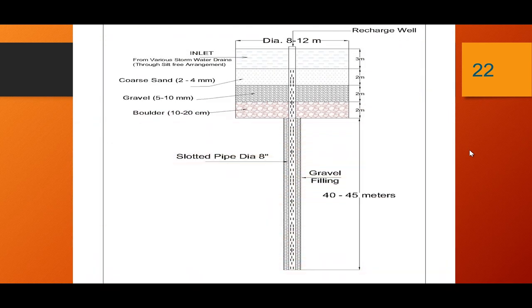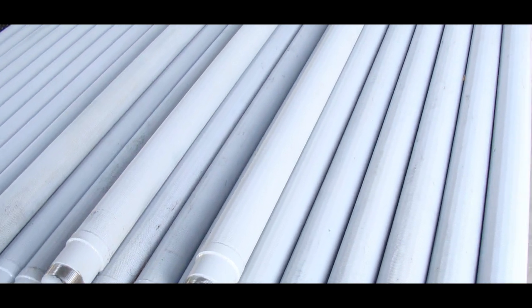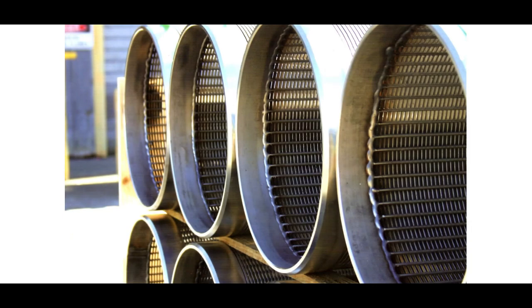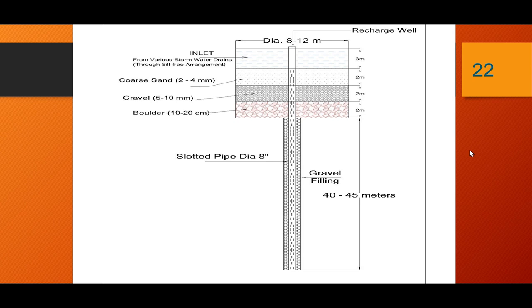This is also a simple recharge well. The difference from the earlier recharge well is that here we use a V-wire Johnson screen. The diameter given here is for reference — diameter may be 6 inch, 4 inch, or 10 inch depending upon the total runoff. The most important aspect of the V-wire Johnson screen is that it is applied in silty areas, where a normal MS pipe screen should not be utilized. If a silt formation or silty layer extends up to 30 to 40 meters depth and we must construct a recharge well, we must use the V-wire Johnson screen, whose intake capacity is more efficient than the normal mild steel pipe screen.